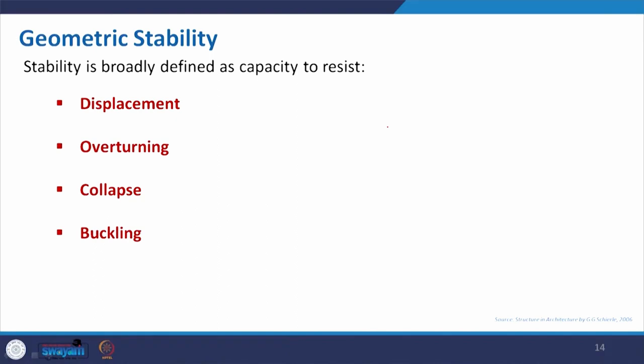Geometric stability broadly helps resist displacement, overturning, and buckling. If a structure is not stable, with minimum force applied it will overturn. Buckling occurs when one end is fixed and pressure is applied — the structure first shortens under compression, and when it cannot compact further, it bends laterally. This lateral instability is another critical problem for structural stability.